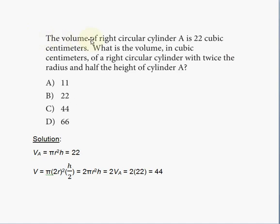The volume of a right circular cylinder A is 22 cubic centimeters. What is the volume in cubic centimeters of a right circular cylinder with twice the radius and half the height of cylinder A?